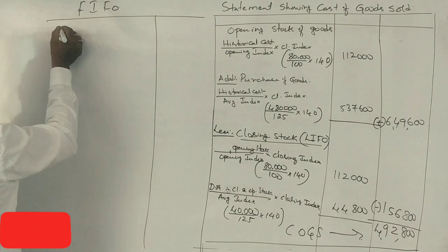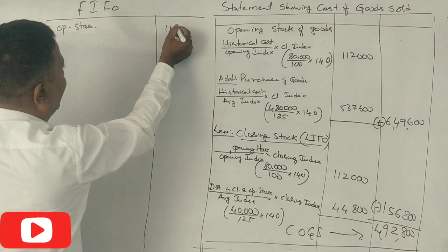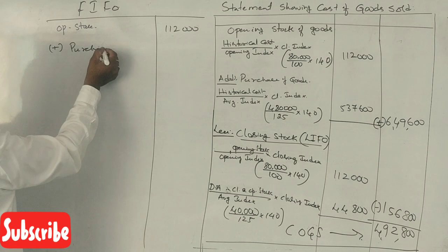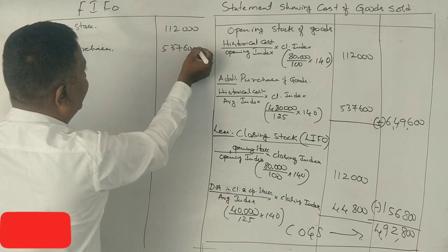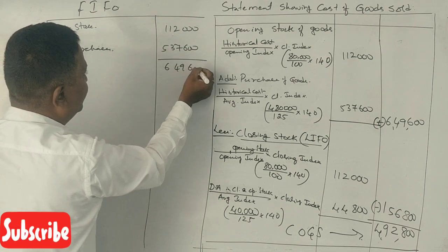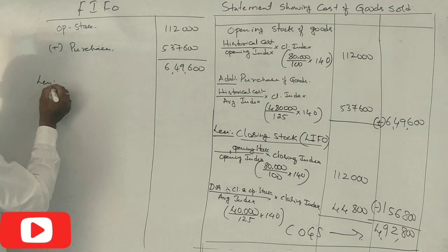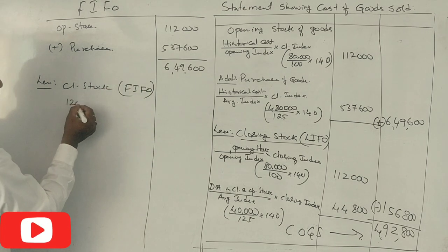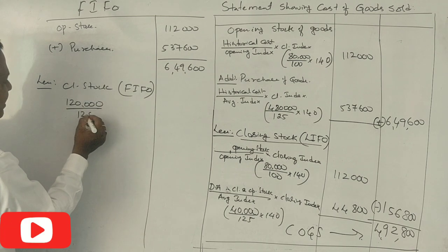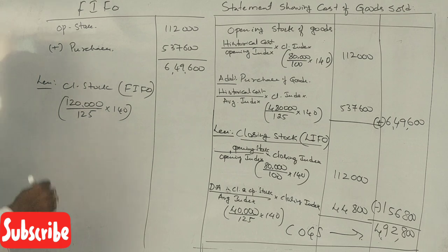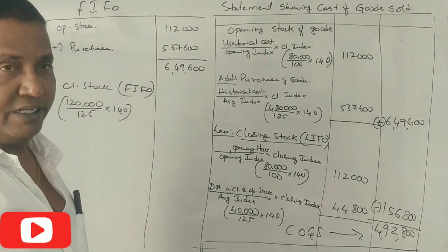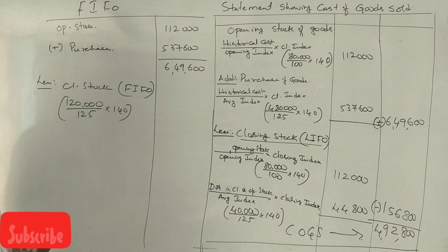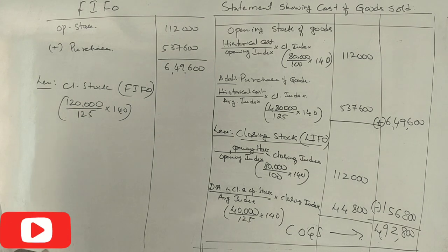Under the LIFO method, opening stock restated is 1,12,000. Plus purchases restated: 5,37,600. Total: 6,49,600. Less closing stock: 1,20,000. Average index is 125. Closing stock restated: 1,20,000 divided by 125 multiplied by 140.